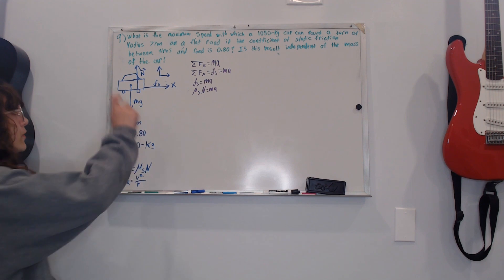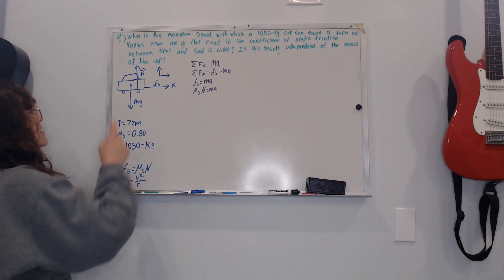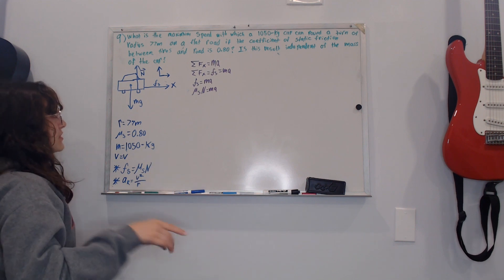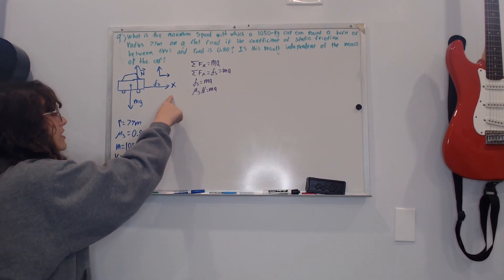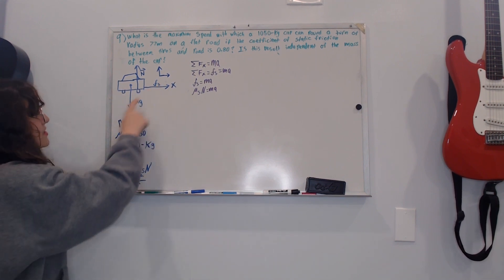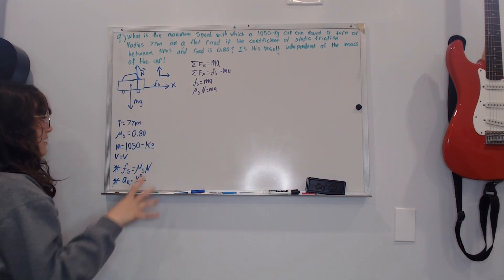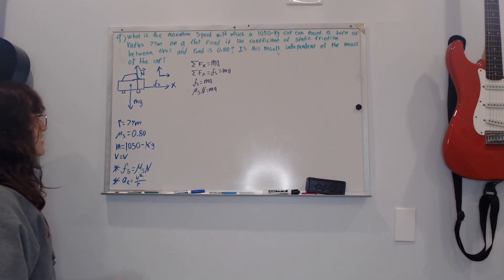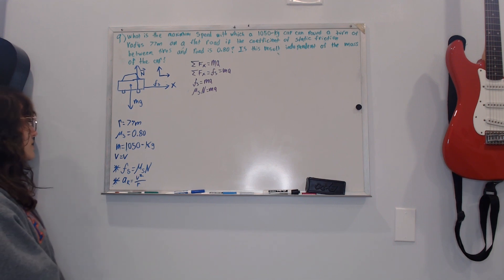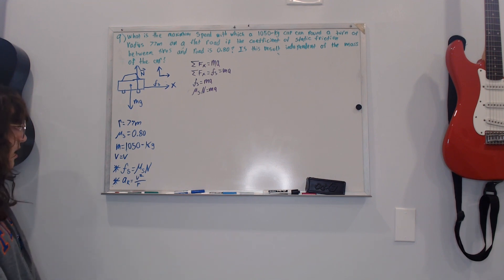I already started on the free body diagram. We have our normal force going upwards from the road, the center of mass going downwards from the center of the car, and static friction going to the right towards the center of the circle. I marked the center of the circle with an X and drew my axis pointing towards the center and upwards. The known values are radius equals 77 meters and mu equals 0.80, mass equals 1050 kilograms, and velocity is what we're solving for.